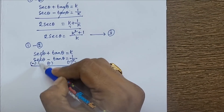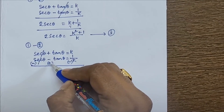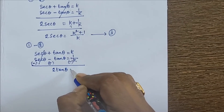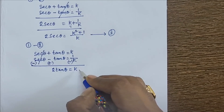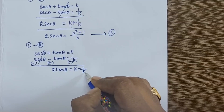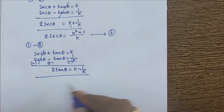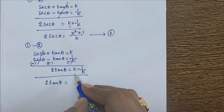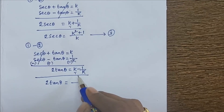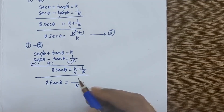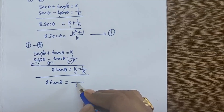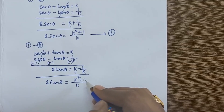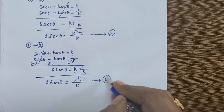After interchanging signs, the secant theta terms cancel. Both tan theta terms are now positive, giving 2 tan theta equals k minus 1 by k. Taking LCM: k into k gives k squared, and 1 into 1 gives 1. So 2 tan theta equals k squared minus 1 by k. Take this as equation 4.